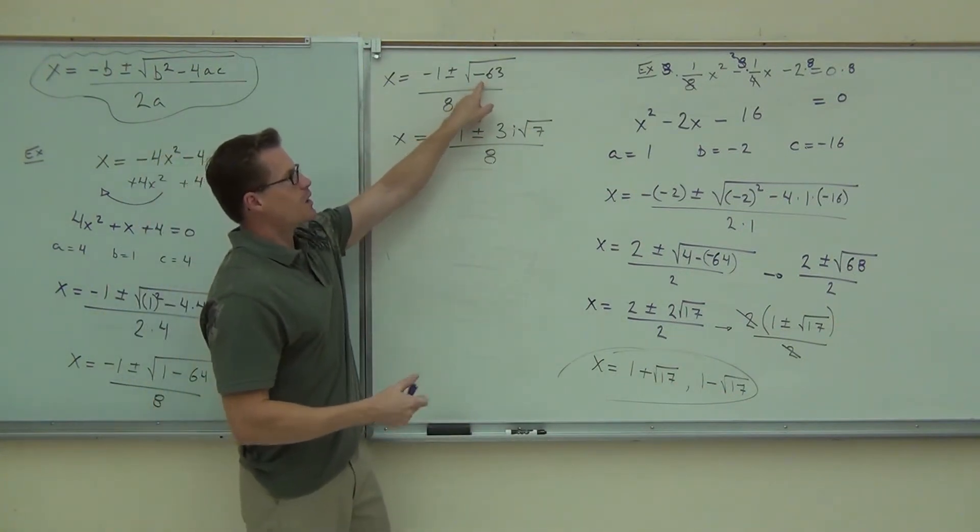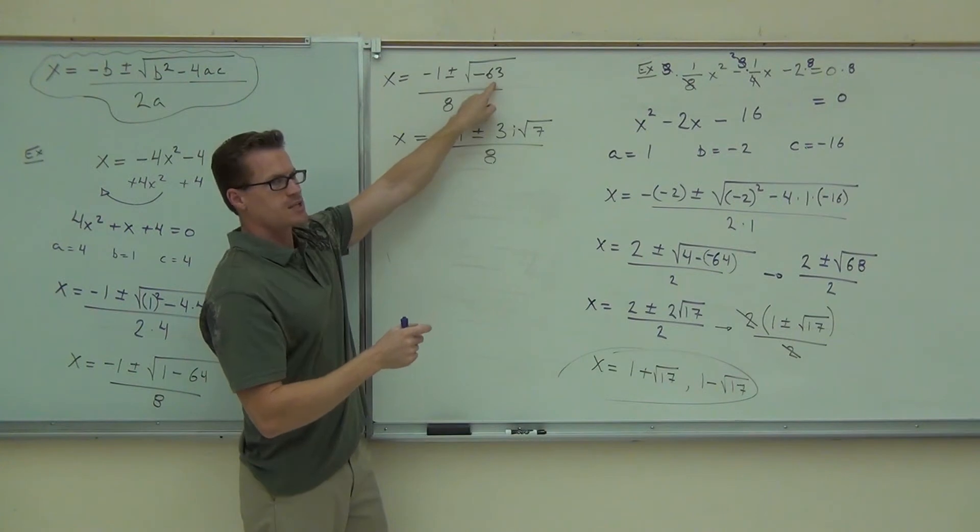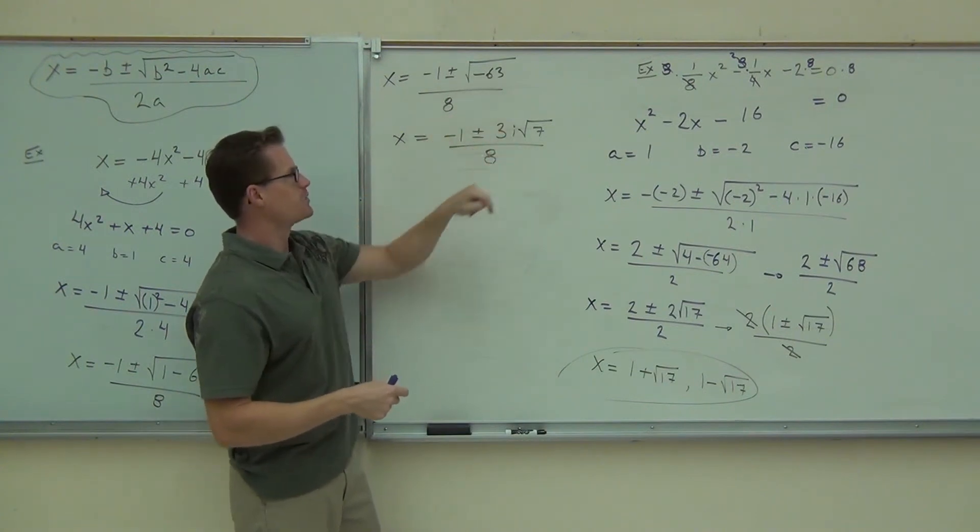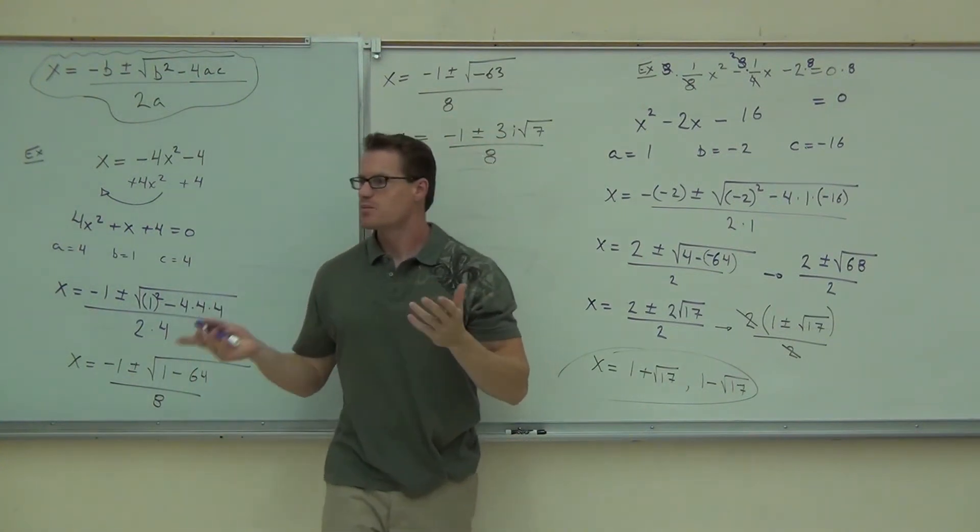So, this is the negative 1. That's our i. 9 times 7. That's 3 root 7. 3i root 7. You can't simplify any more than this.